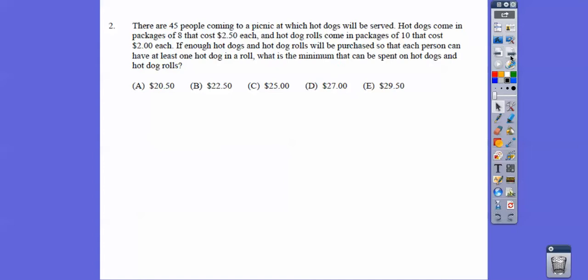There are 45 people coming to a picnic at which hot dogs will be served. Hot dogs come in packages of 8 that cost $2.50 each. So if they come in packages of 8 and we're serving 45 people, we're going to need 6 packages. 6 times 8 will be 48, that'll be enough to cover the 45 people.